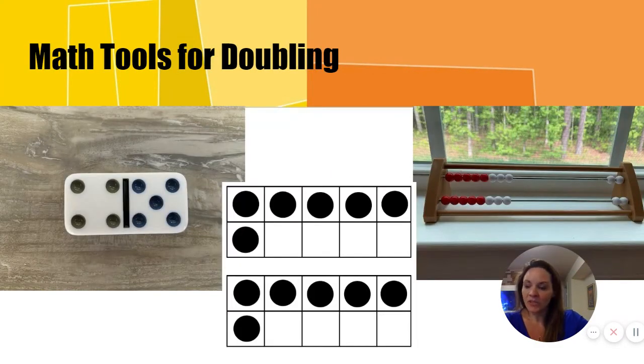Tools that are helpful to use with a doubling strategy include dominoes, rekenrek, and double ten frames. If I used a total of sixteen beads on the rekenrek that's above me right now, split between the two rows, there are eight beads in each row. Since eight and eight make sixteen, sixteen minus eight equals eight.